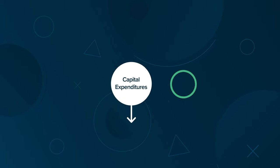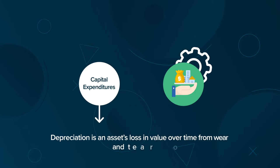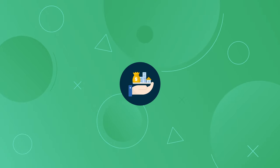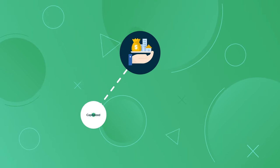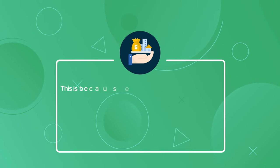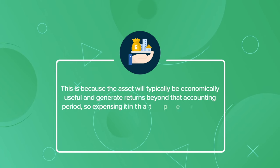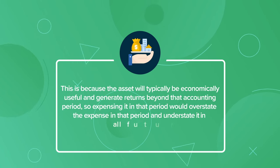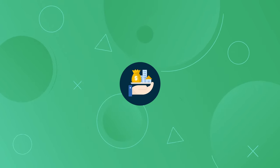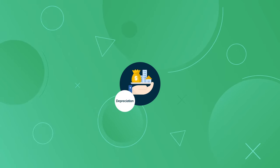Capital expenditures often depreciate once the asset is put in service. Depreciation is an asset's loss in value over time from wear and tear or aging. When a long-term asset is purchased, it is often capitalized instead of being expensed in the given accounting period it is purchased in. This is because the asset will typically be economically useful and generate returns beyond that accounting period, so expensing it in that period would overstate the expense in that period and understate it in all future periods. To avoid this, depreciation is used to better match the expense of a long-term asset to the revenue it generates.